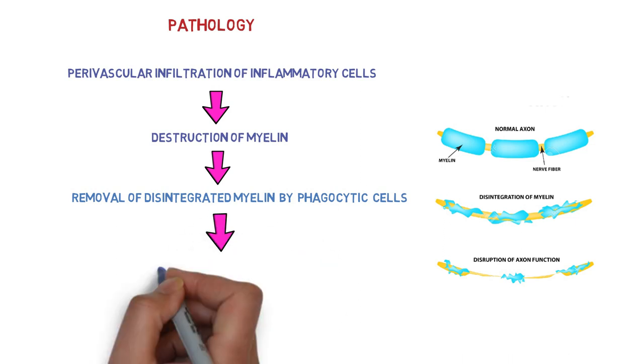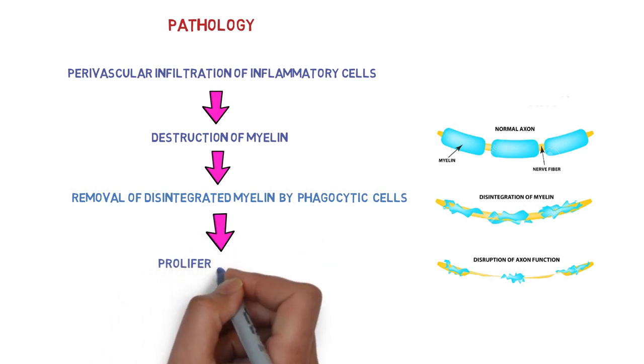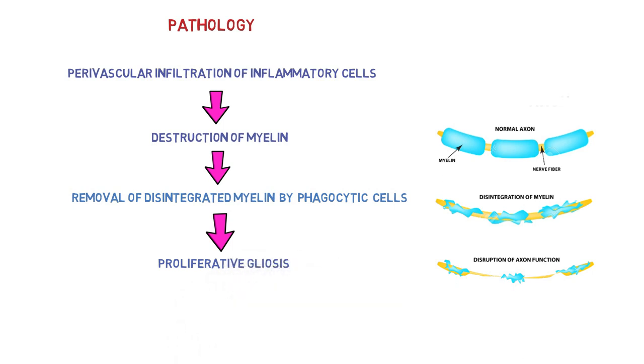The last one is there is proliferative gliosis and there is destruction of axon function.